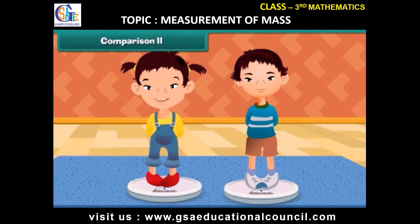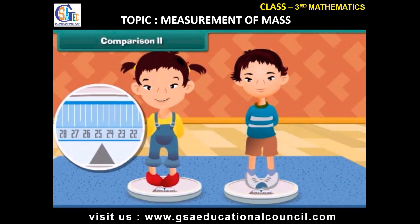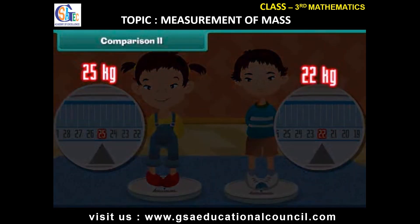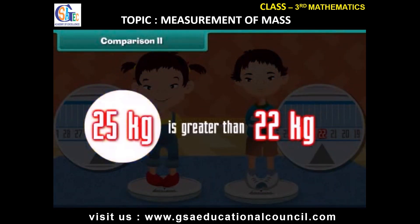Two children measure their weight. The weight of the first child is 25 kilograms and the weight of the second child is 22 kilograms. It is right to say that the weight of the first child is greater than the second one.